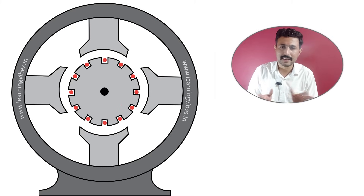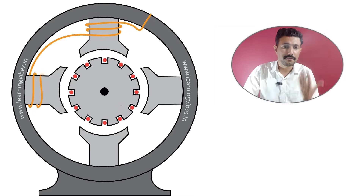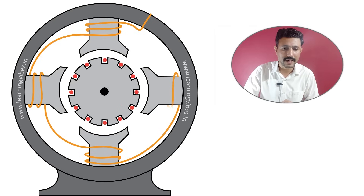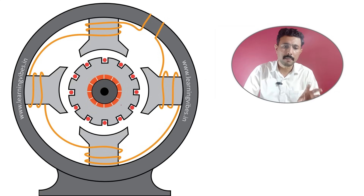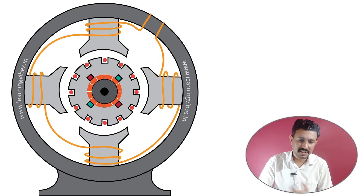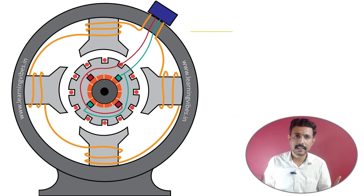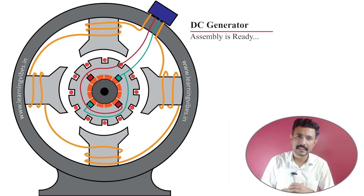This rotor winding is known as the armature in the case of a DC machine. On this pole, we need to place field winding, which can be mounted like this. Once the field winding is done, we will place the commutator segment on the shaft. Once the commutator segment is placed, we will place the brush assembly on that commutator segment. Once the brush assembly is ready, we will connect it with the terminal box. Finally, our complete generator is ready.